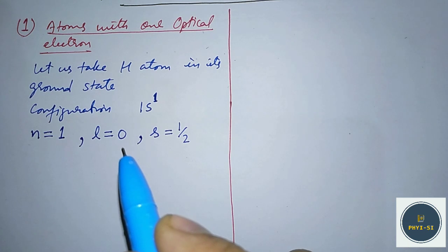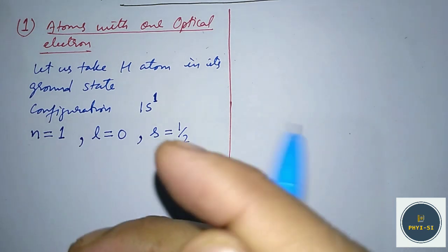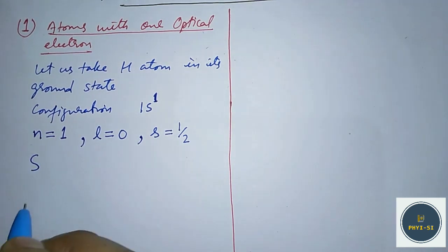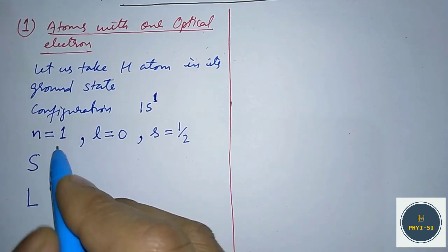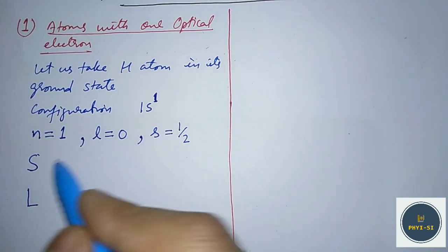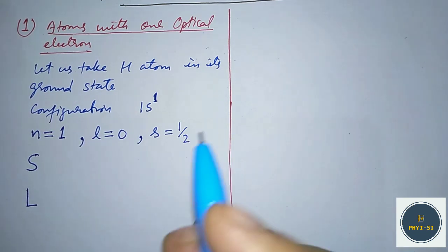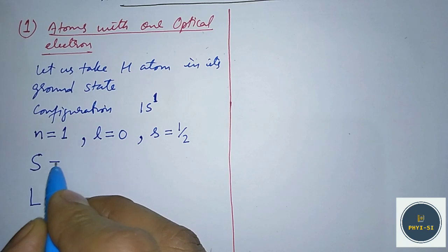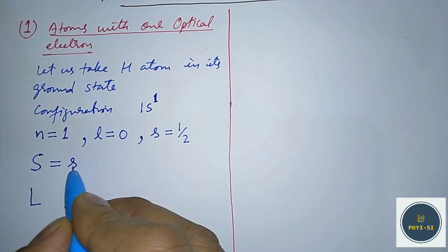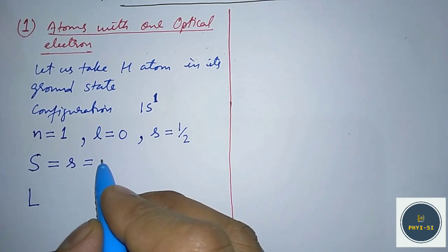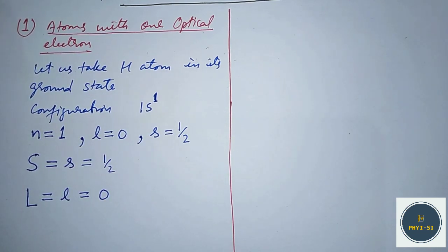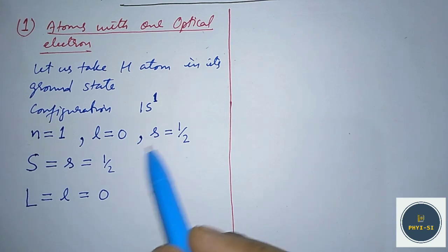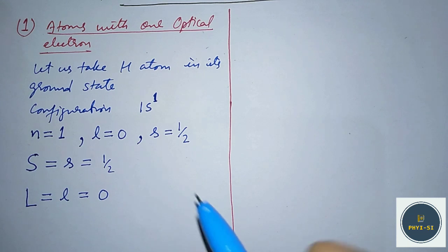To apply LS coupling, first we have to find the total S value (capital S) and the total L value (capital L). Remember, capital L is not the same as small l, and capital S is not equal to small s. But in this particular case, since we have just one single electron, S equals small s, which is 1/2, and L equals small l, which is zero.